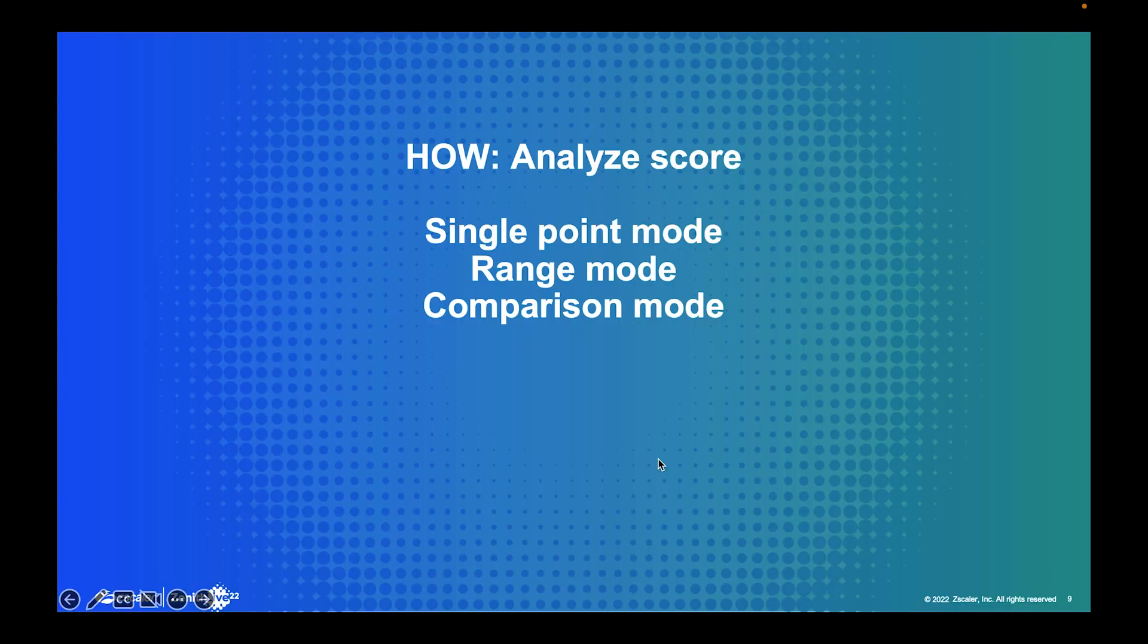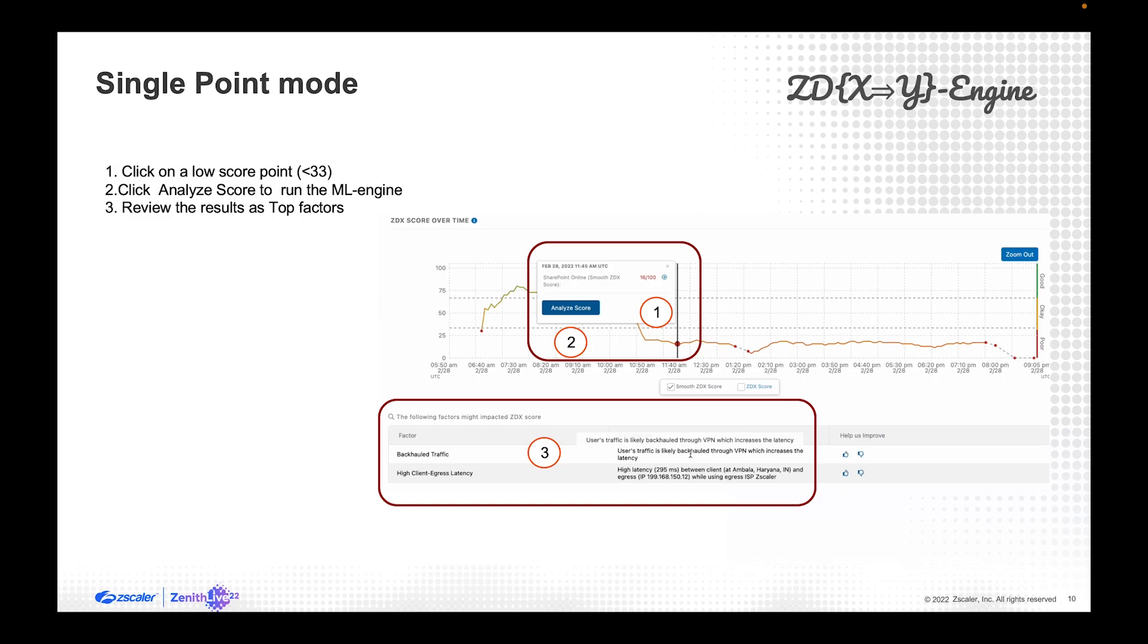So how are we doing it? We added three modes in CDX as part of the Y engine. The first one is single point mode, where I click on a point score and the system will tell me what's going on. We can select the range of time and it's going to tell me what's going on during that time. And when I don't like the analysis, I use the comparison mode. This is a slide that shows how easy it is to use the single point analysis. It's just clicking on a bad score point, click the analyze score button, and then the AI is going to run. I'll show you a demo at the end.